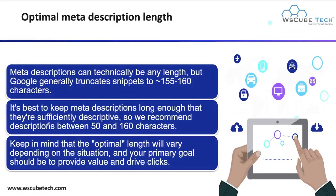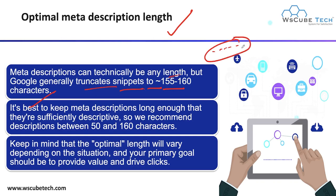Now let's talk about optimal meta description length. Meta description can technically be any length, but Google generally truncates snippets to 155 to 160 characters only. So it's best to keep your meta descriptions long enough that they are sufficiently descriptive. We recommend that your meta description length should be between 50 and 160 characters, because after 160 characters your meta description will be cut off, which is a negative impact.